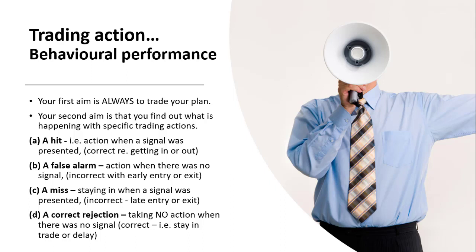The second scenario is a false alarm: you took action when there was no signal. This is incorrect — an early entry with an itchy trigger finger, or exiting too early before any reversal in a long trade, or before your profit target was hit. The third scenario is a miss — staying in when a signal was presented to exit, or not getting in at all when a signal was presented — resulting in a late entry or exit.